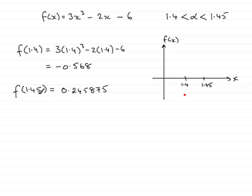That when you put 1.45 through the equation, the value of x comes out to be 0.245875. So let's just imagine that's this point up here.